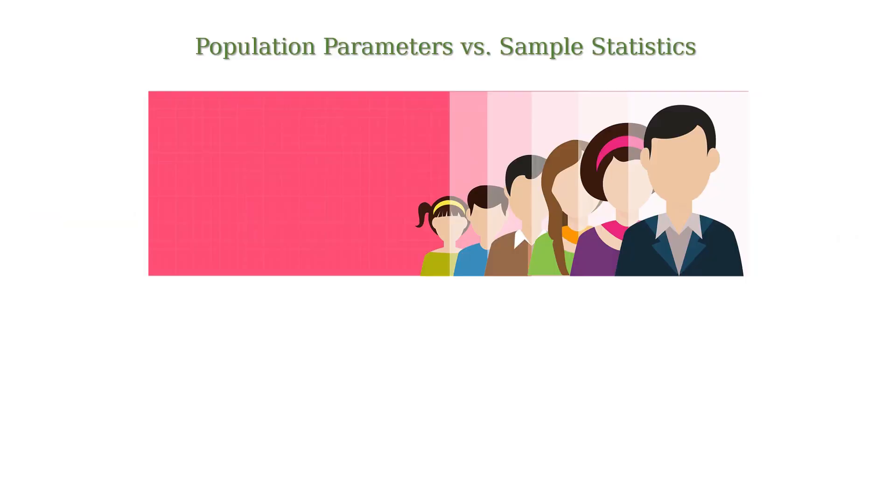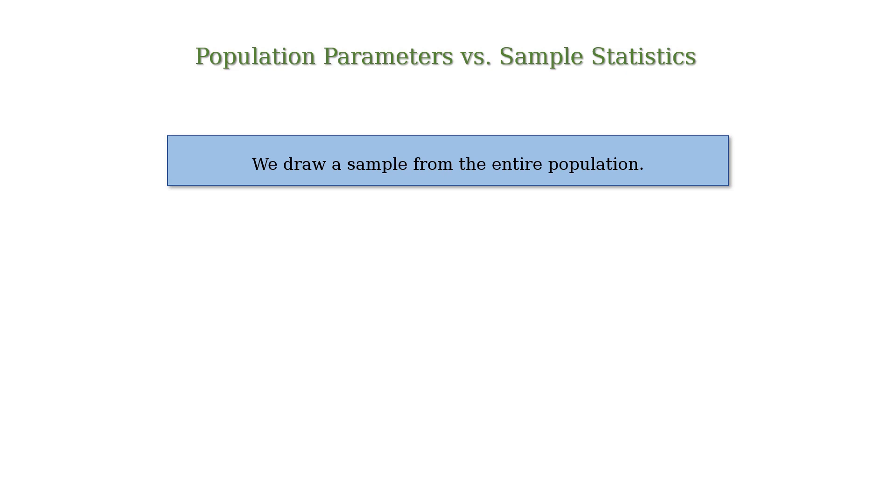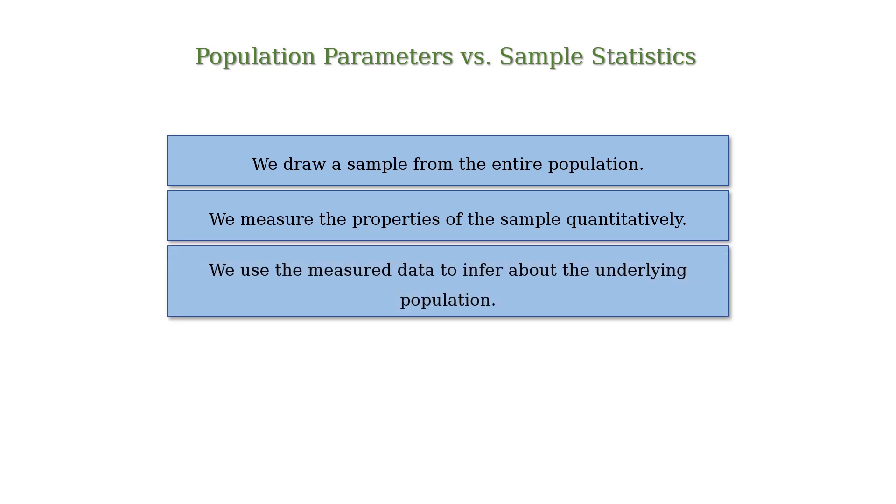Let's say we want to measure the average height of people in India. Now the average height of people in India has a value, but it is not feasible to measure the height of every person in India. So we draw a sample from the entire population and measure the properties of the sample quantitatively. Then we use the measured data to infer about the underlying population.